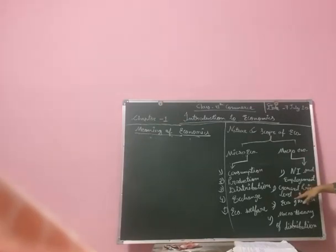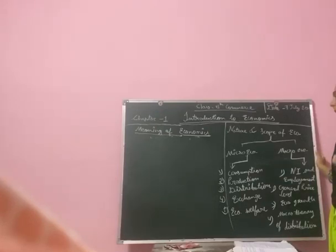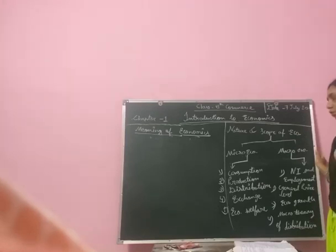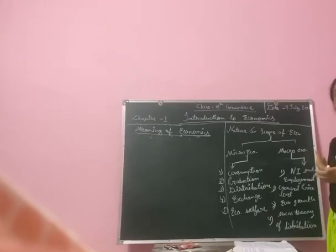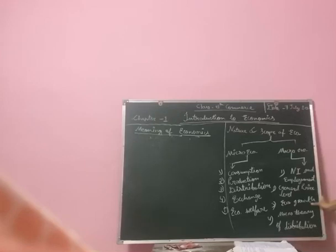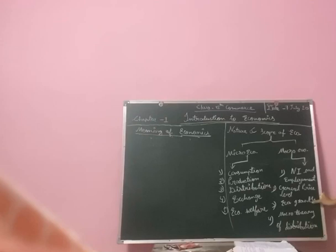Basically, the general price level refers to the overall price situation in the country or area. If purchasing power is more than the needs, and people have money to complete their needs, then the price will definitely be reduced. Economic growth and general price level are both linked — if national income and purchasing power are good, then economic growth will definitely be good.